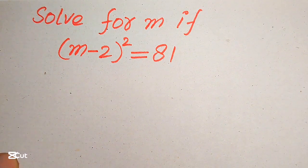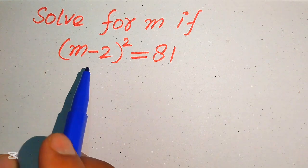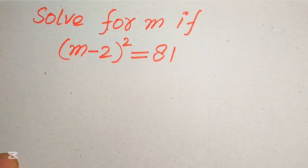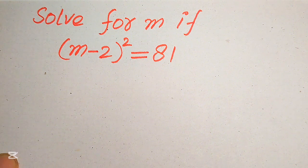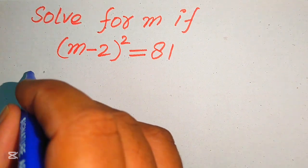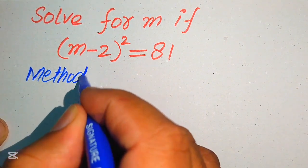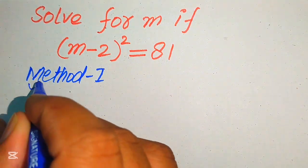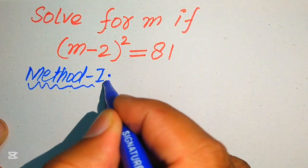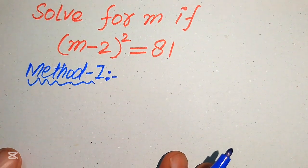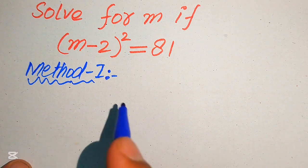Hello everyone, welcome. We will solve this nice algebra problem: (m minus 2) whole square equals 81. We will solve this problem using two methods. If you have any other method in mind, please don't hesitate to write it in the comment section.